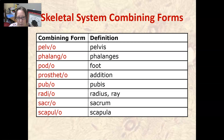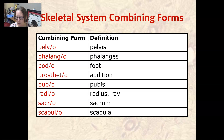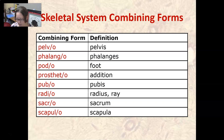Pelvo means pelvis. Phalango means phalanges. Podo means foot. Prostheto means addition — as in a prosthesis, like a synthetic arm or leg. Pubo means pubis. Radio means radius or ray. Sacro means sacrum. Scapulo means scapula, or the shoulder blade.